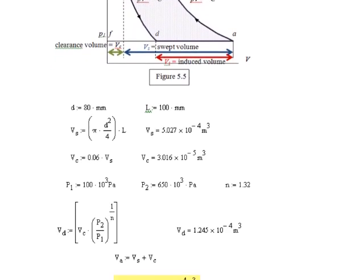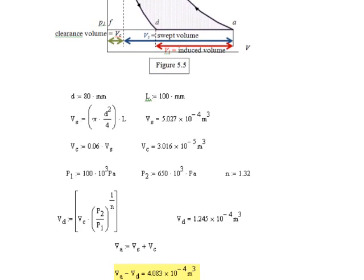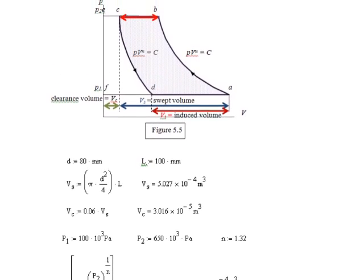We now use the pressures. We are given the inlet pressure P₁ = 100 × 10³ Pa and the outlet pressure P₂ = 650 × 10³ Pa. It's important we use these two pressures to calculate Vd. What is Vd?